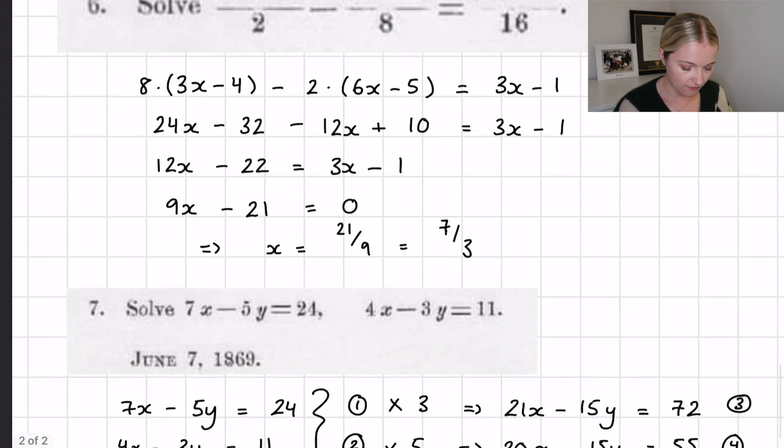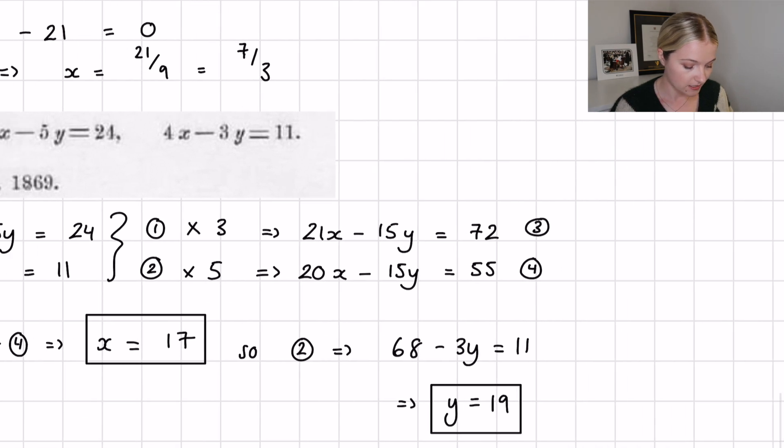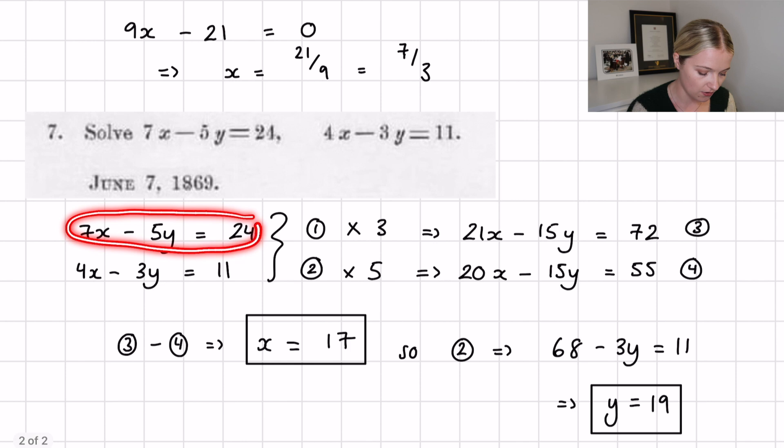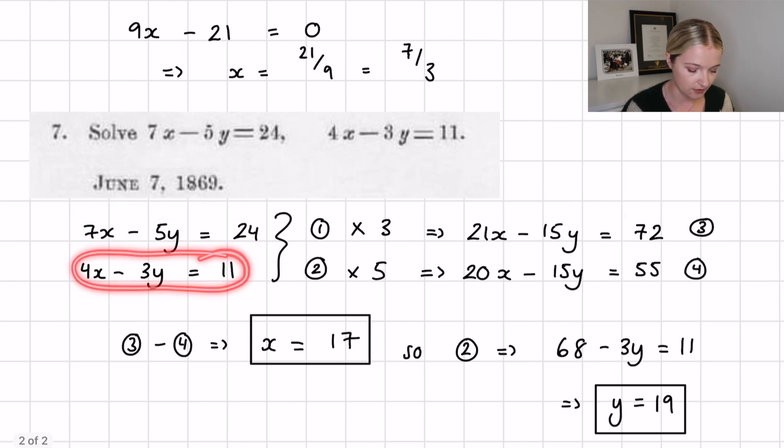Now the very final question was simultaneous equations. It is a nice simultaneous equation. We have 7x minus 5y equals 24 and 4x minus 3y equals 11. So I said that this was number 1, I said this was number 2, and all I did was multiplied 1 by 3 and multiplied 2 by 5, and that's to make the coefficients of y, the y variable, the same. So we end up with 21x minus 15y equals 72 and 20x minus 15y equals 55.